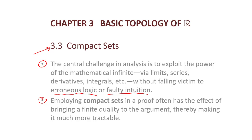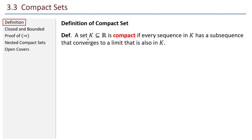One of the reasons that we study sets a lot is because sets will form domains of functions. If a function has a nice domain, then the function often has nice properties. Compact sets are some of the nicest sets we can use as domains for our functions. Here's the definition: a set K of real numbers is compact if every sequence in K has a subsequence that converges to a limit that is also in K.